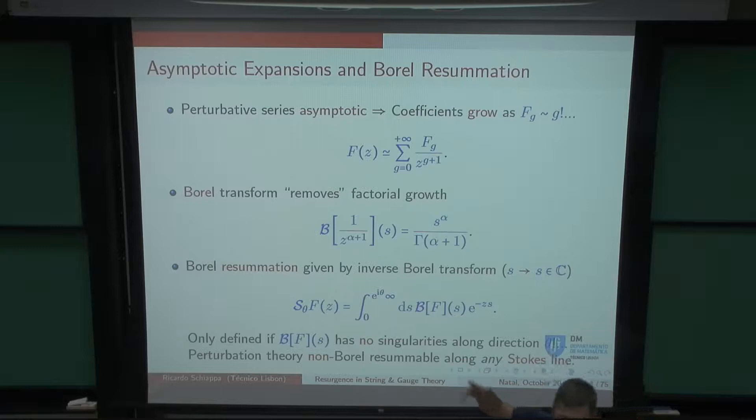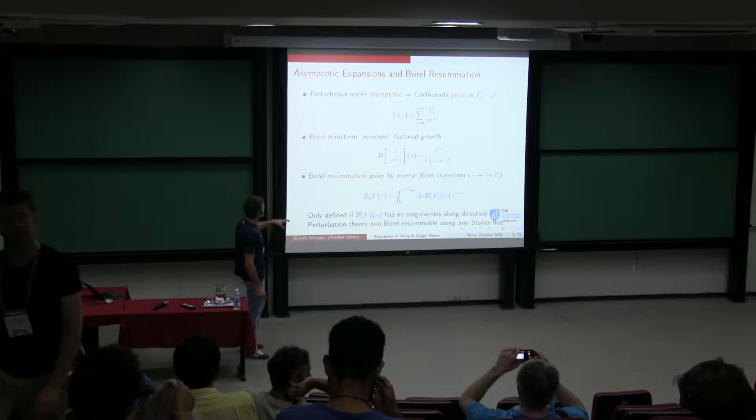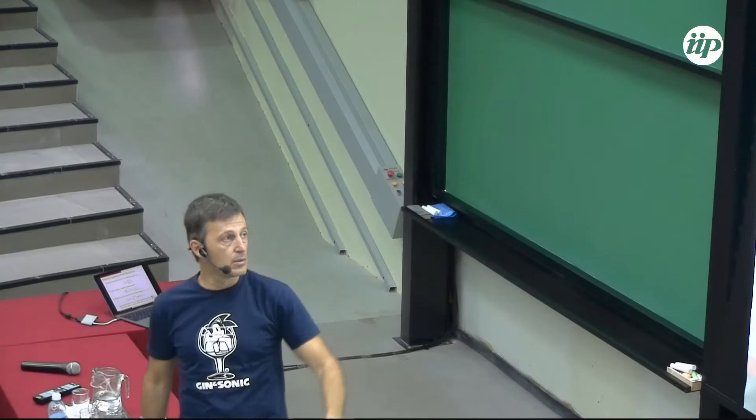You can have the large-N expansion in mind. If you do that, you compute coefficients F_G — that's the G-loop order coefficient — and they grow as G factorial, which means that series itself is asymptotic. It's got zero radius of convergence; it doesn't converge anywhere. So you cannot really get a number out of it. This is well known for a long time.